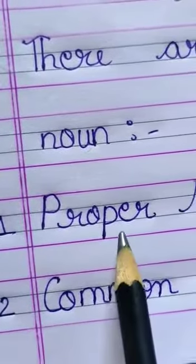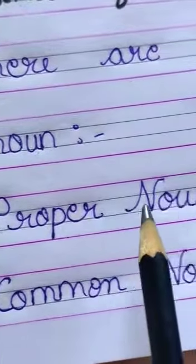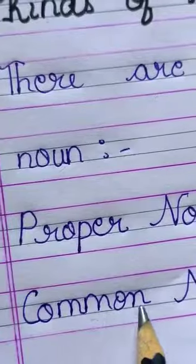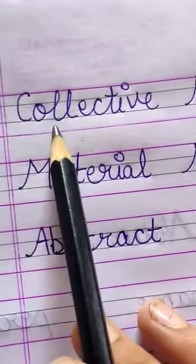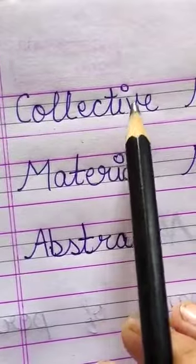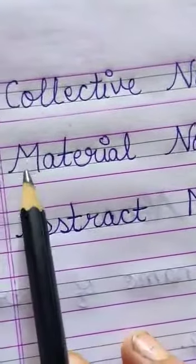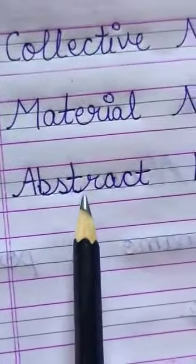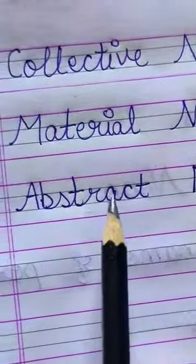They are: First, Proper Noun — P-R-O-P-E-R. Second, Common Noun — C-O-M-M-O-N. Third, Collective Noun — C-O-L-L-E-C-T-I-V-E. Fourth, Material Noun — M-A-T-E-R-I-A-L. Fifth, Abstract Noun — A-B-S-T-R-A-C-T. These are the five types of noun.